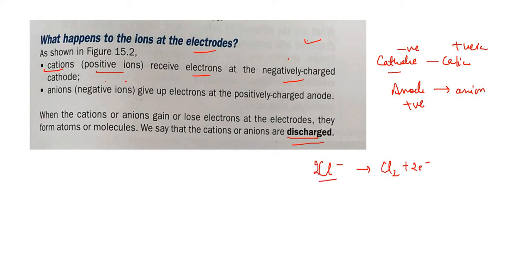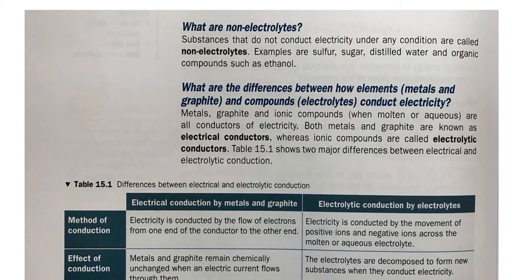Non-electrolytes are substances that do not conduct electricity under any condition. Examples include covalent compounds like sugar, distilled water — which has no ions — and organic compounds like ethanol.